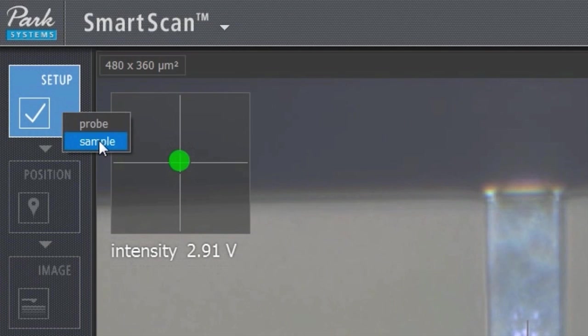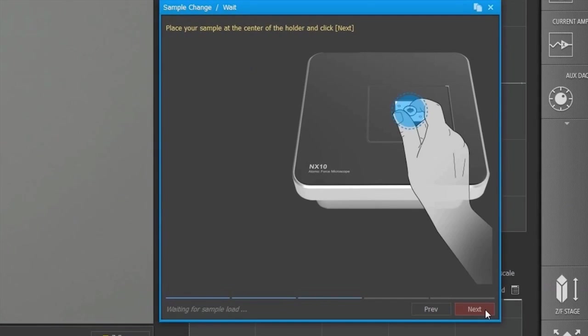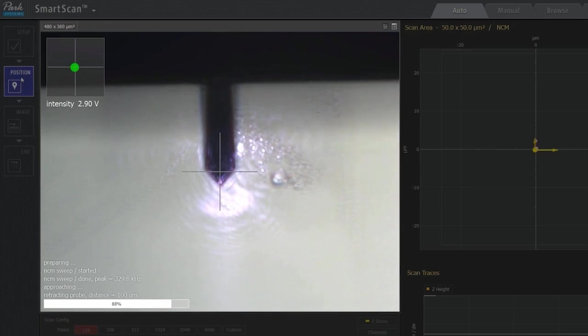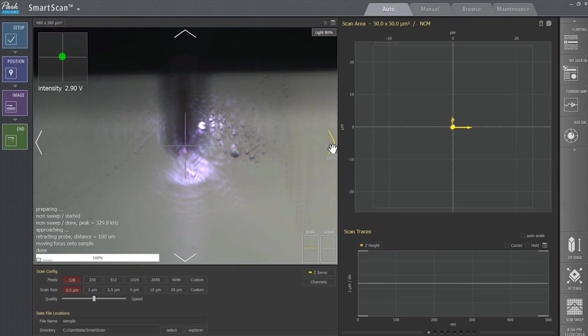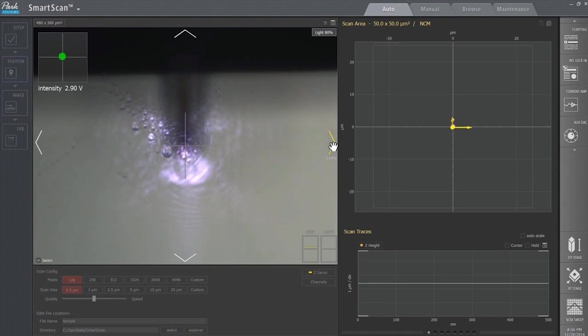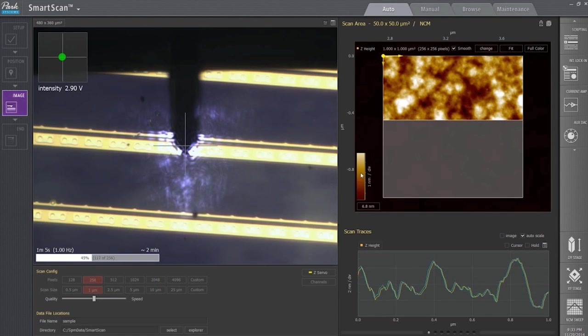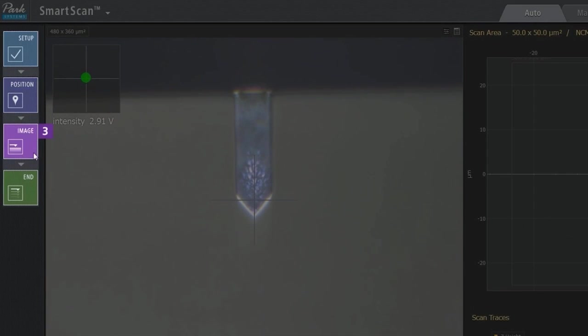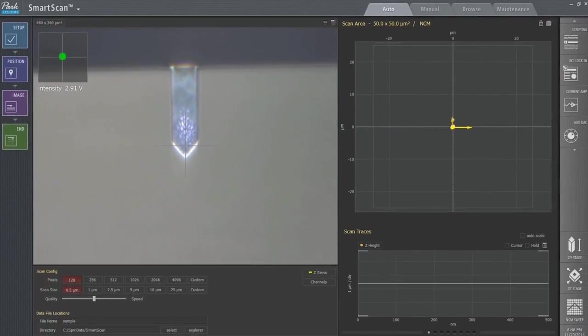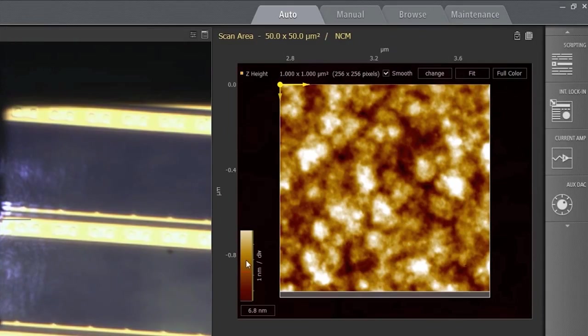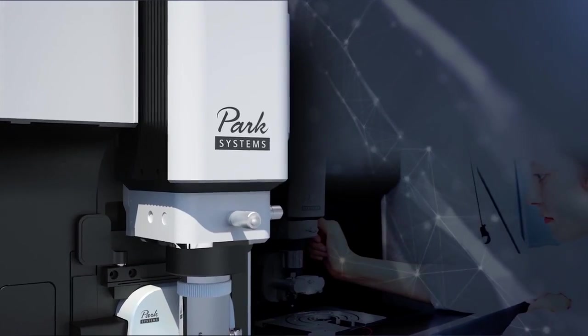Park Systems builds upon this superb hardware technology with the dedicated operation software Park Smart Scan, making it possible for anyone to obtain optimal AFM images by using the software's auto mode without the need for an experienced operator. A few simple clicks and Park Smart Scan automatically calculates optimum values, making AFM image measurements simple and easy.